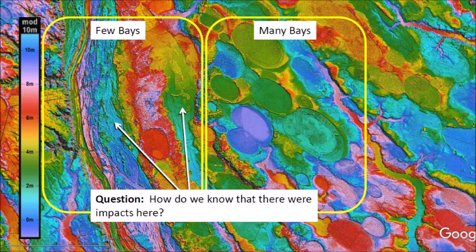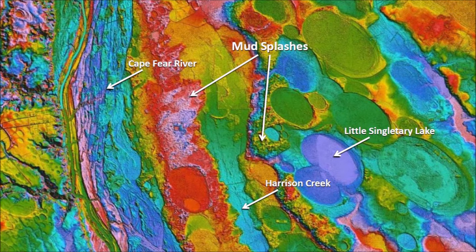One thing is to deduce that there were impacts along the Cape Fear River, and another is to prove it. So how do we know there were impacts on the Cape Fear River and Harrison Creek? We look for splashes of river sediment. In this enlarged image we see the mud splashes, also called splash chevrons, which were created when sediment from the river and the creek was carried to higher terrain by wave action.